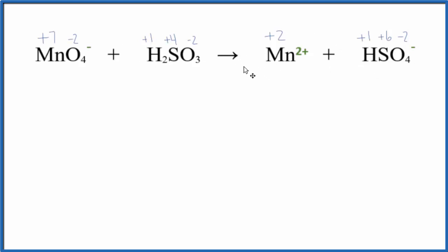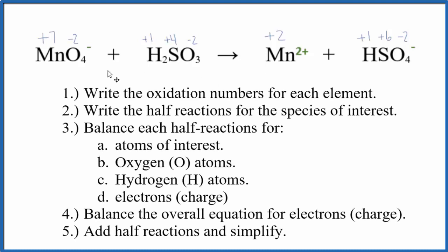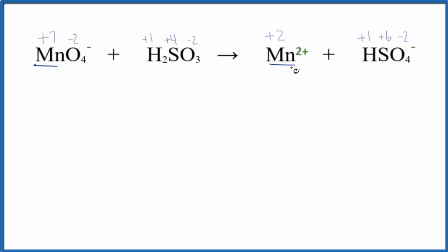For the second step we need to write the half reactions for the elements that changed. Mn went from plus seven to plus two, so that changed. And then the sulfur went from plus four to plus six. So we're interested in the S and the Mn, the sulfur and the manganese. When you write the half reactions for each one of those species, this is what you end up with.